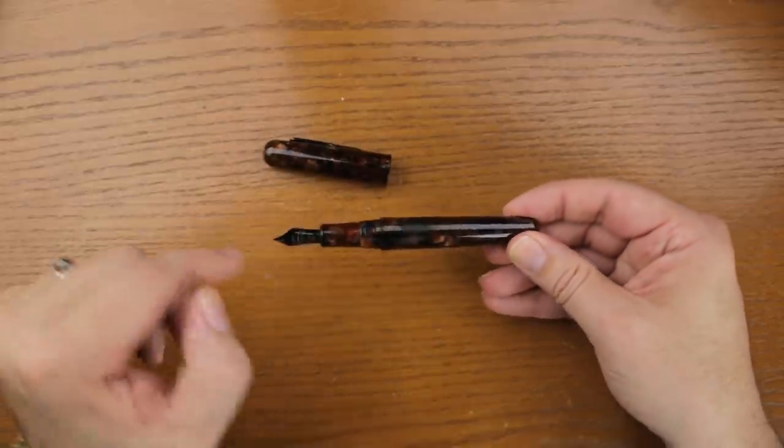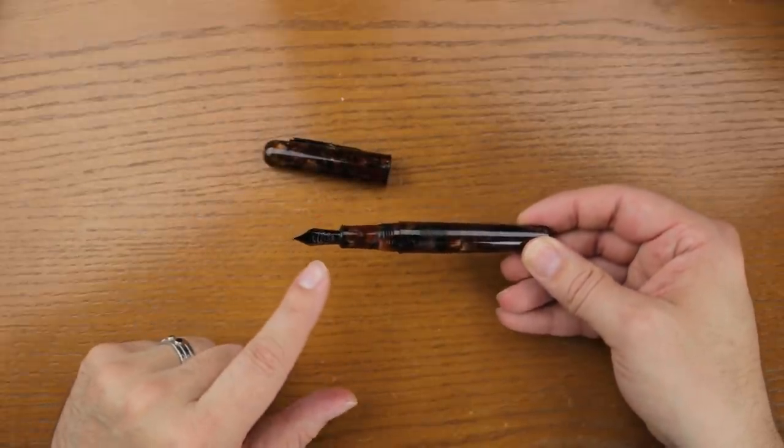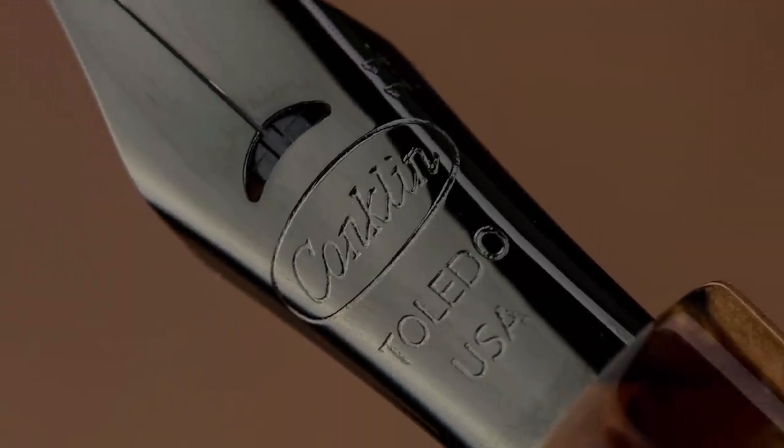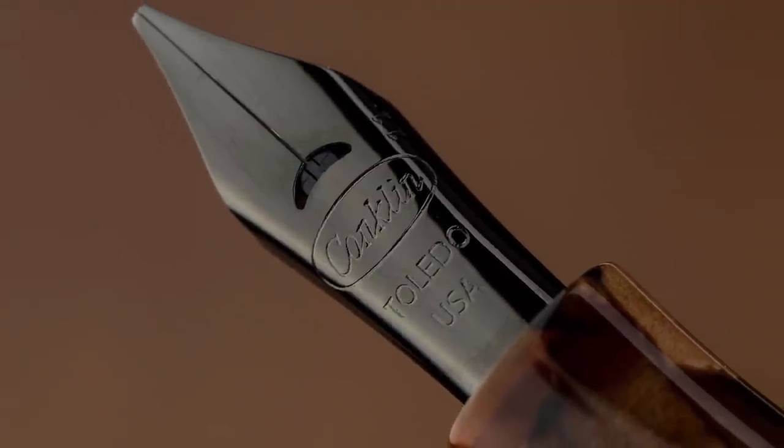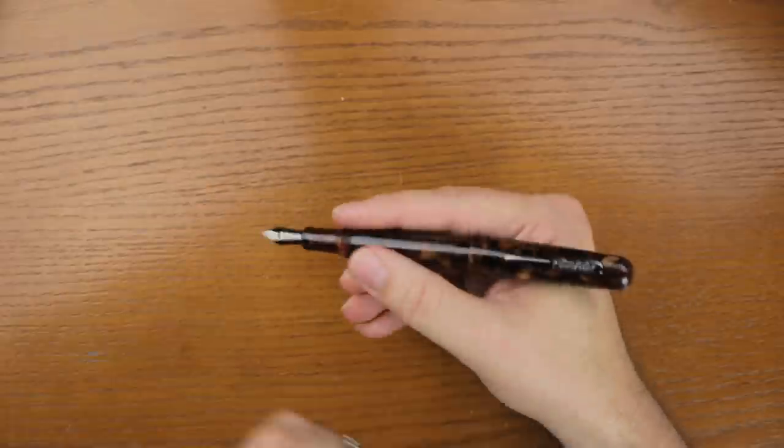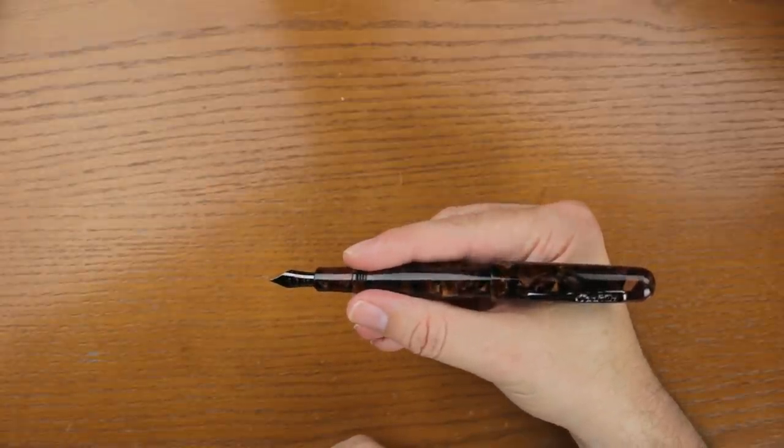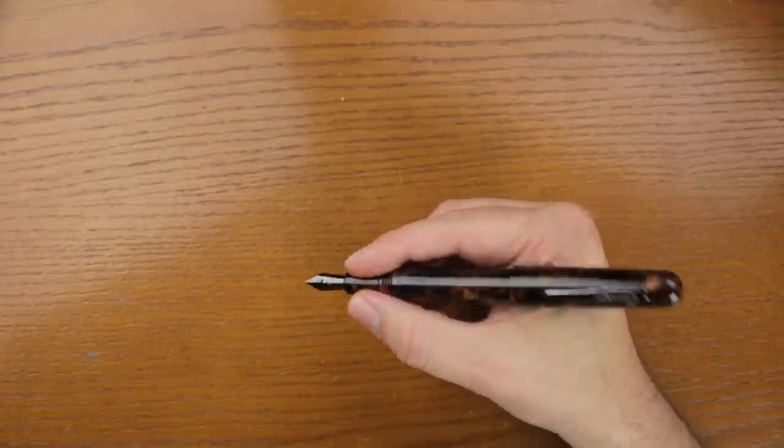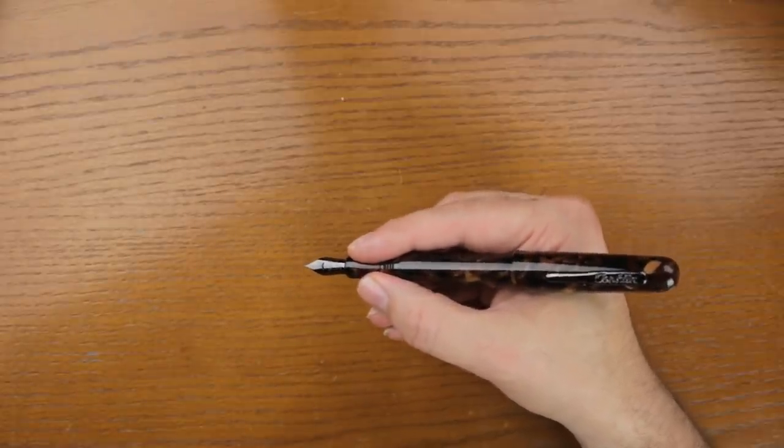And along with that dark trim, we've got a black nib here to supplement it. And let's take a look. We can post. It does post. It's a little bit long. It's got a little bit of a wobble to it, but it's not bad. If you have big hands, I would say you could post it.